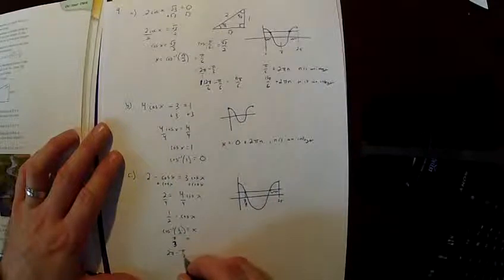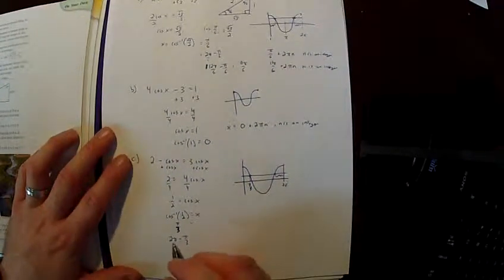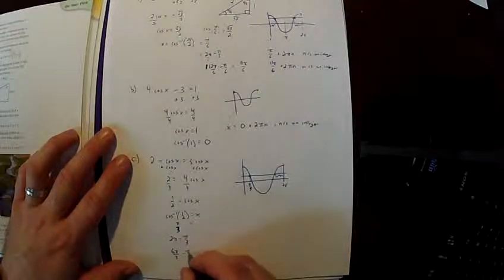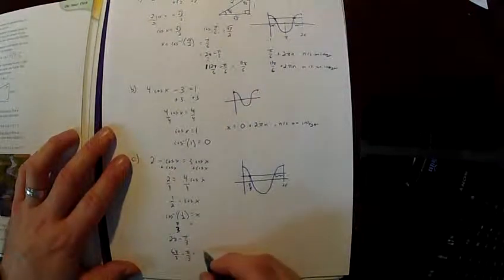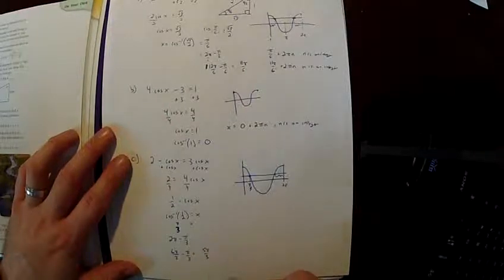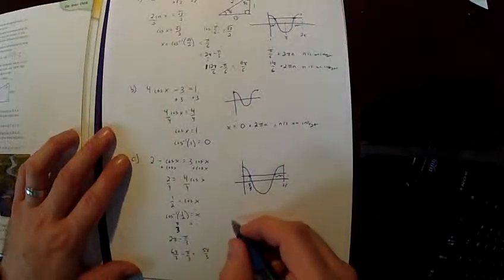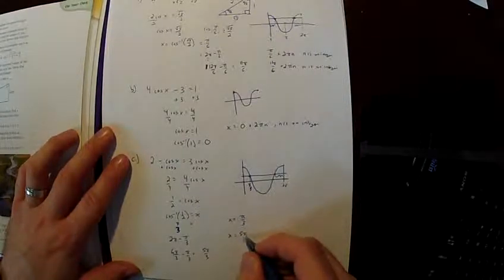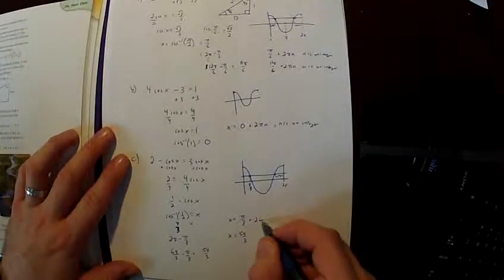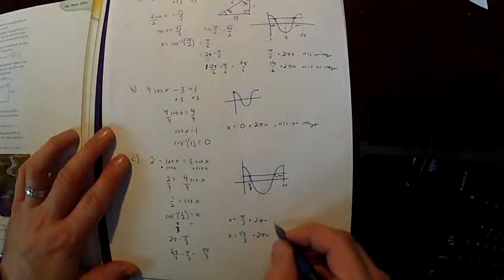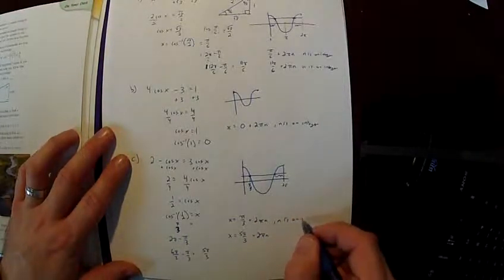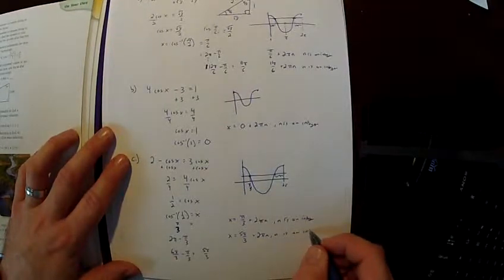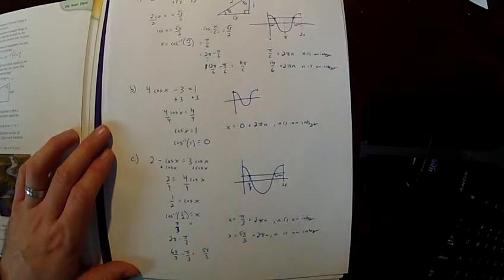Put those in common denominators. This is going to be 6 pi over 3 minus pi over 3. This is going to yield 6 minus 1, or 5 pi over 3. So my two solutions I'll write out here as x is equivalent to pi over 3, or x is equivalent to 5 pi over 3. And we'll add 2 pi n to both of these, where n is an integer. And that will conclude question number 9.